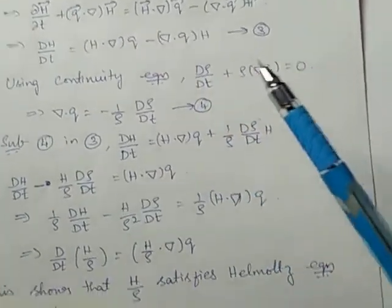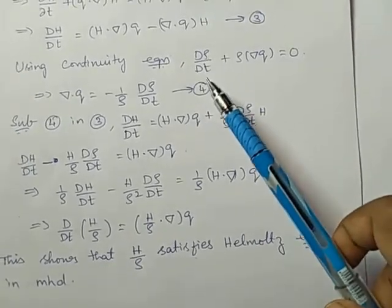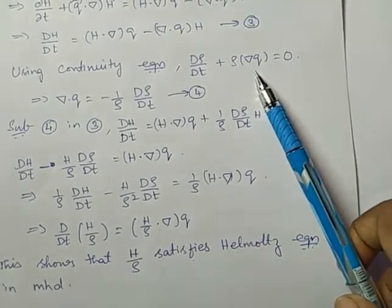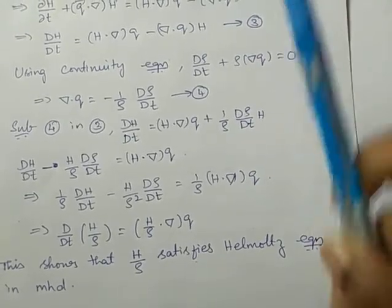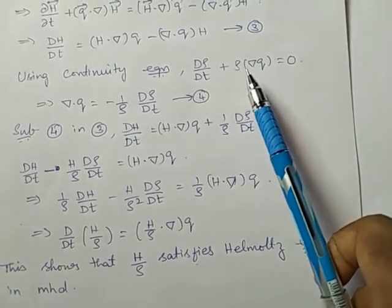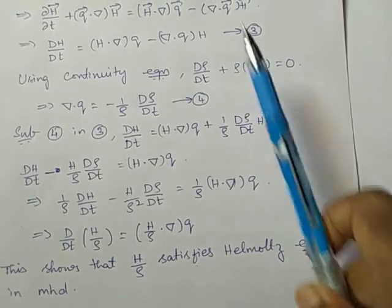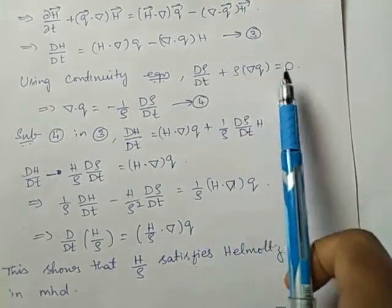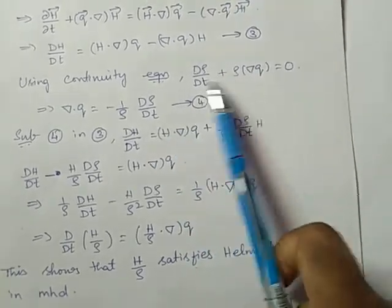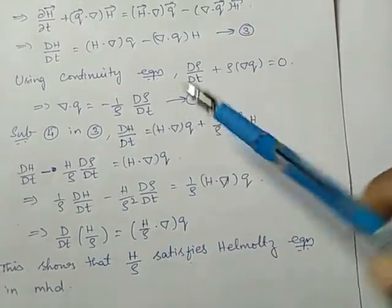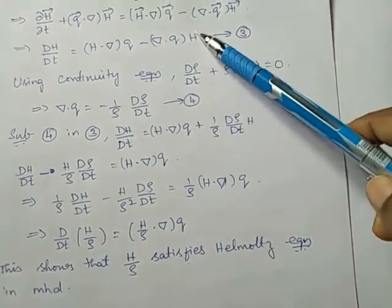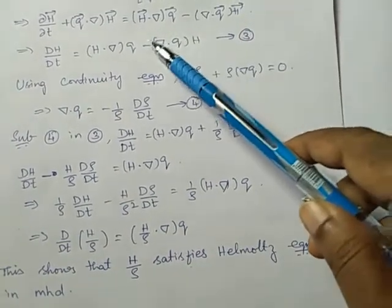From continuity equation, we have d rho by dt plus rho into del q equals zero. Therefore, del dot q is minus d rho by dt divided by rho, which is one by rho. Substitute this in the equation in place of del dot q.